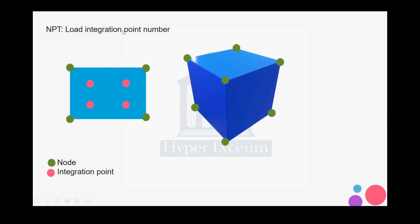Integration points are very important in Abaqus, which uses them for solving the FEM model. Each element has a few nodes in 2D and 3D elements, but the integration points are located in the middle of the elements. We cannot see the integration point in a cuboid because it's in the middle of it. Abaqus gets the value from the integration point and then applies the results to it.